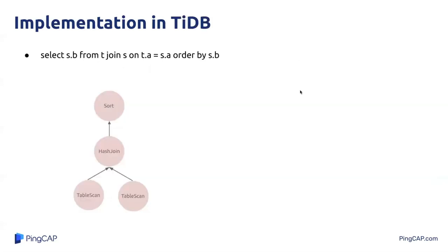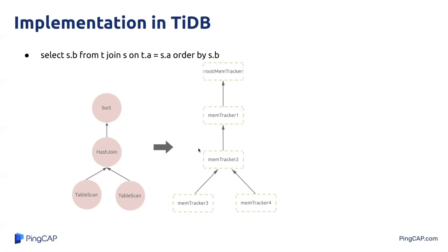Next, we'll see how TIDB organizes the memTrackers and OOM actions to build its memory management mechanism. We take a SQL as an example that queries A and S.B from the join result of T and S. We assume the generated query plan tree has two table-scan operators, a hash join operator, and a sort operator. For each operator in the query plan tree, a memTracker will be built to track the memory usage of the related operators individually. A memory tracker tree will be built according to the query plan tree, and a root memTracker will be defined as the root node to track the total memory usage of this SQL.